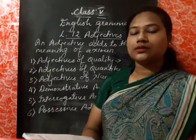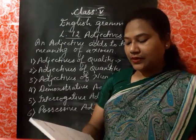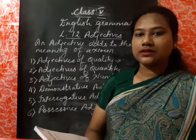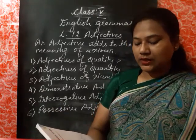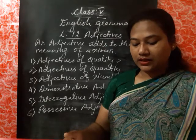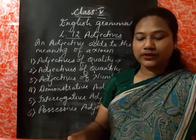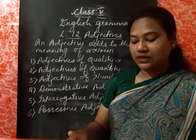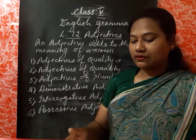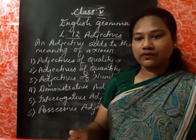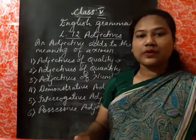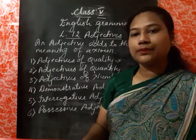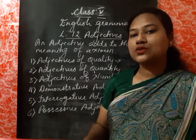There are six kinds of adjectives. The first one is adjectives of quality. Second is adjectives of quantity. Third is adjectives of number. Fourth is demonstrative adjectives. Fifth is interrogative adjectives. And the sixth one is possessive adjectives. We will go through them one by one.